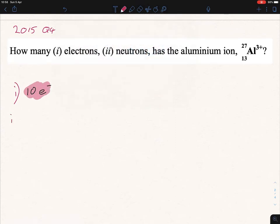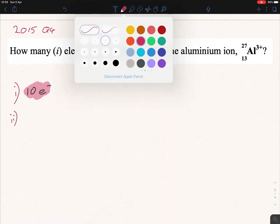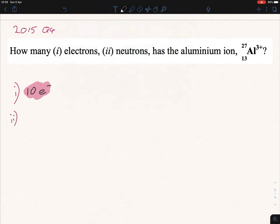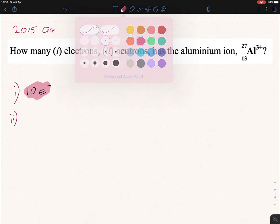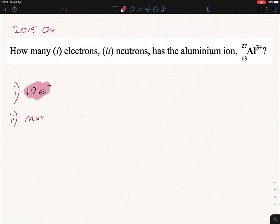Now the next one is asking for the number of neutrons, and as I did with past videos, write out your formula, that's the key. So the mass number equals the number of protons plus the number of neutrons. So manipulate that formula to get neutrons on one side and everything else on the other side. So it becomes mass number minus the number of protons, and you get your number of neutrons.